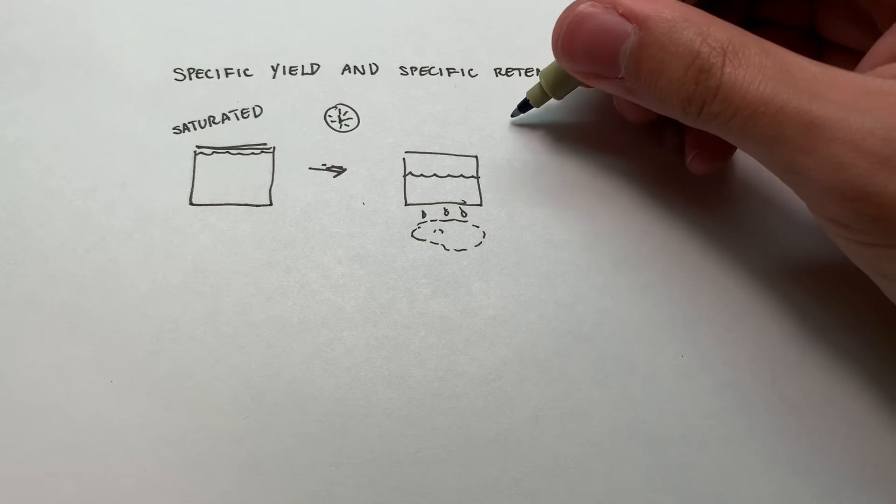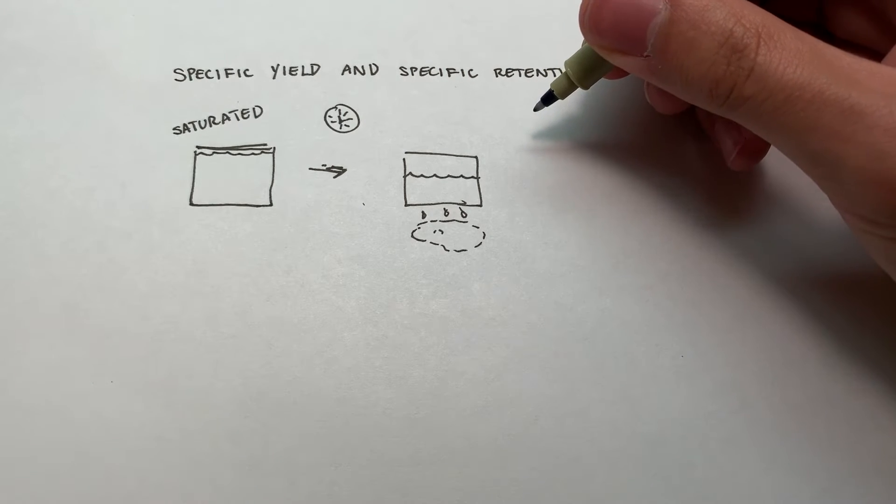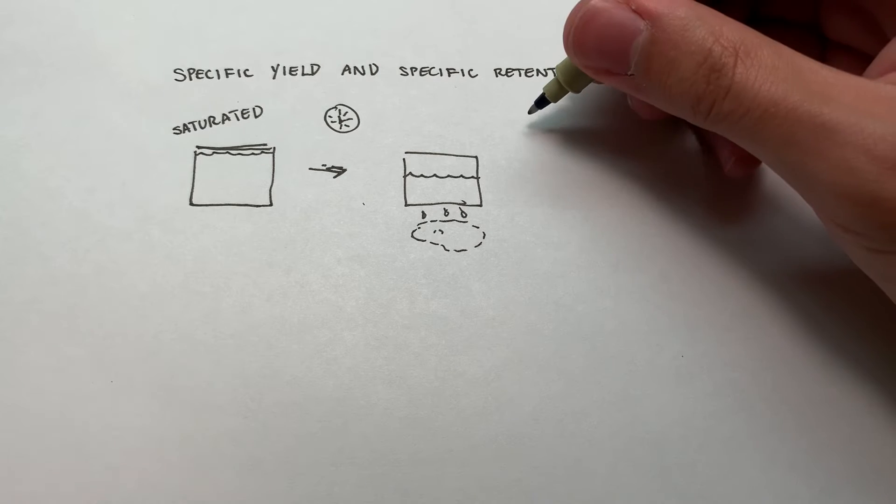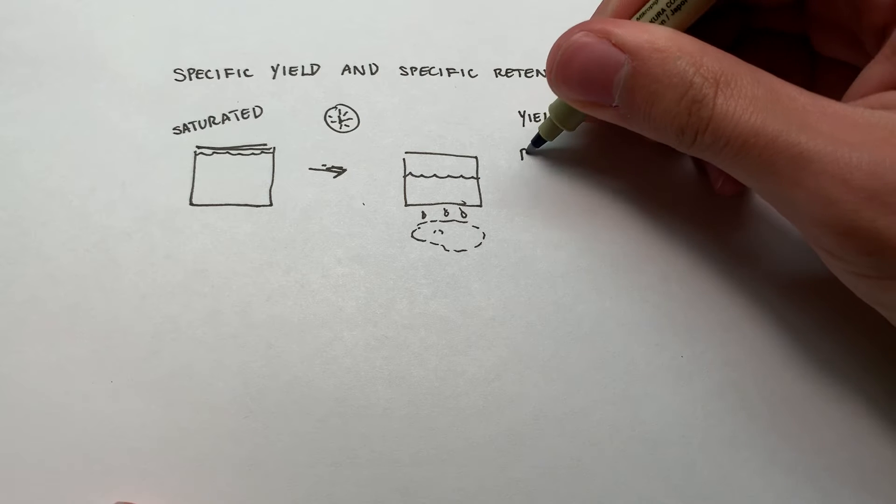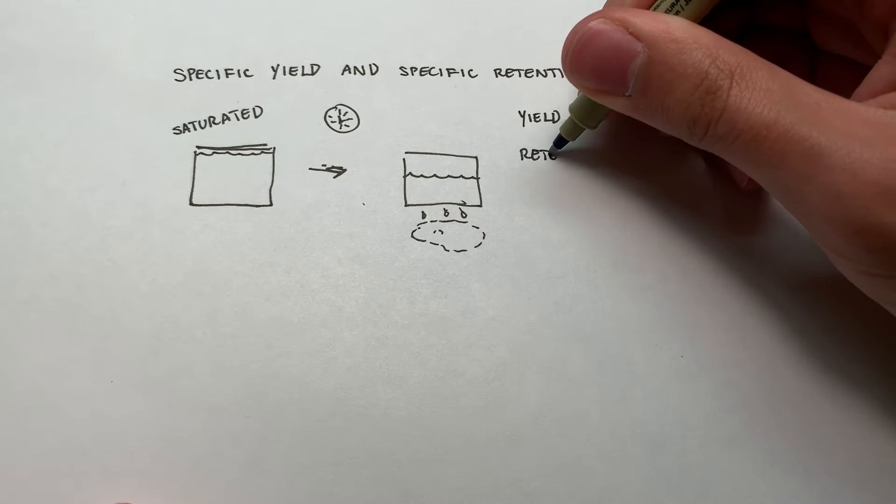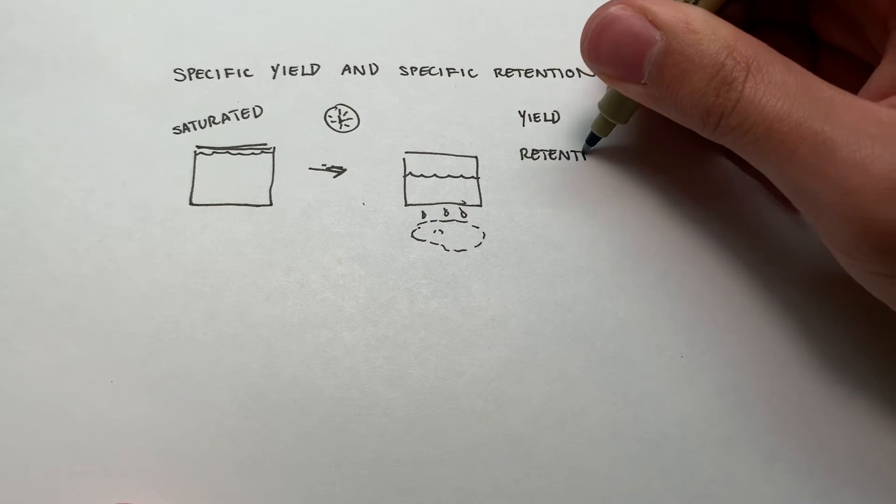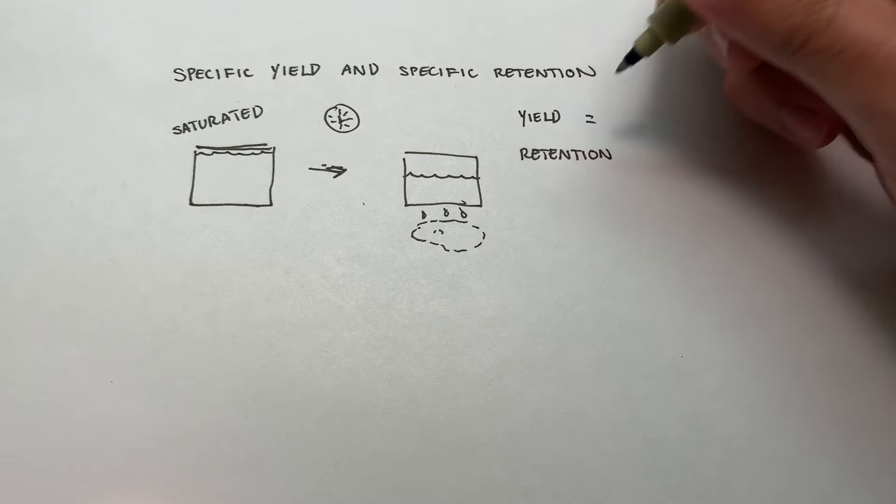So there are no real variable or symbols that I've seen really used for specific yield and retention, probably because these aren't two widely used parameters. Usually in the field, we're going to be using porosity, but I figure it's good to know where these come from.